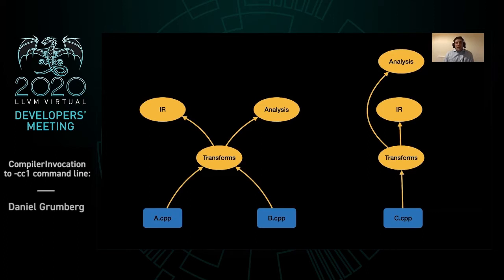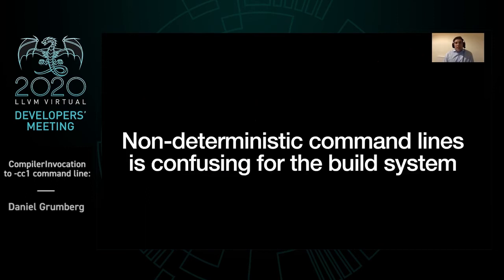ClangScanDeps is a parallel tool, so we might discover the dependency on transforms either through A or through B first, and this would lead to reporting a different command line to the build system. This is bad because non-deterministic command lines are confusing for the build system — it believes the modules to be invalidated every time the command line changes, and therefore it will rebuild the modules on every scan potentially.